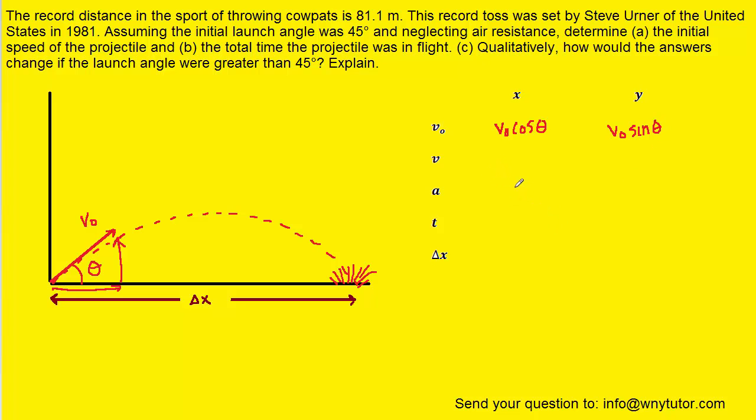The acceleration in the x direction is typically zero for projectile motion questions, but for the y direction it's negative 9.8, the acceleration due to gravity. If we look carefully, the displacement in the x direction is delta x, which the question noted was 81.1 meters.